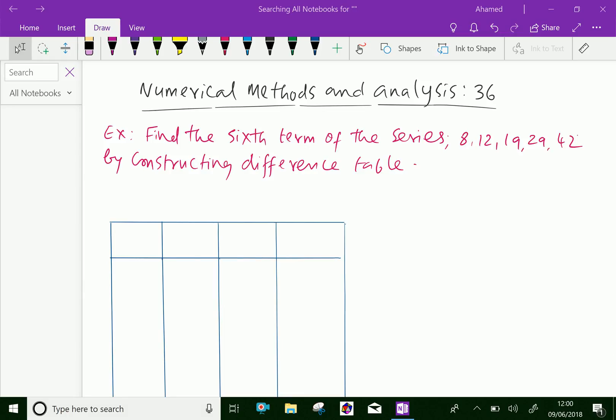Welcome to AminAcademy.com. In numerical methods and analysis, let us do some example problems to find unknown terms in the series. Look at this example. Find the sixth term of the series 8, 12, 19, 29, and 42 by constructing a difference table.